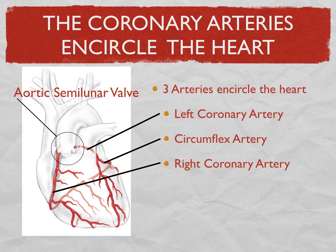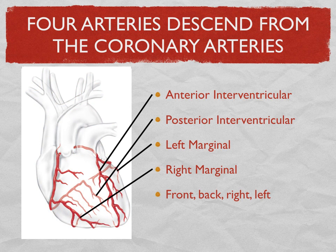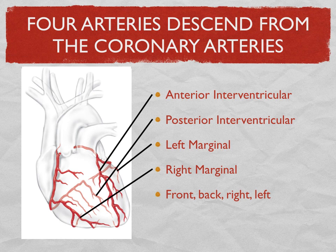The four arteries that descend over the surface of the ventricle are pretty easy to figure out. Basically you have two interventriculars and two marginals. An interventricular is in between the two ventricles — one in front and one in back, anterior and posterior. And just like the margins of a piece of paper, the margins are on the side, so there's a right marginal artery and a left marginal artery. It's kind of like the points of a compass: one in front, one in back, one on the right, one on the left.